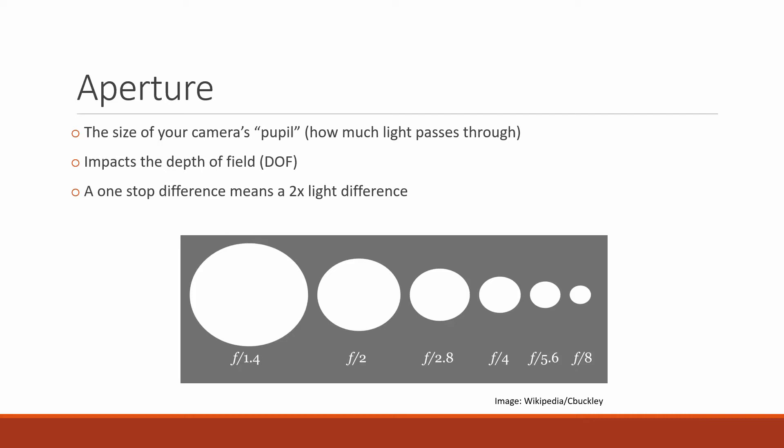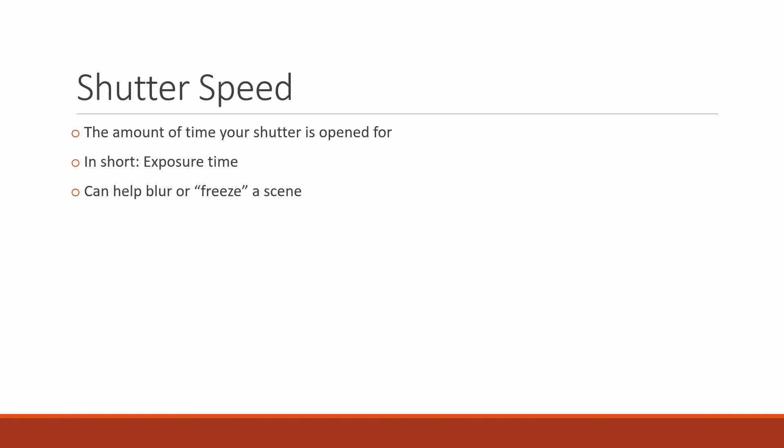You can go all the way down to f/22 or even f/32 depending on the quality of your lens and how many blades it has. You don't need to remember all of that — just remember that f/1.4 is a wide aperture whereas f/8 is a much smaller or narrower aperture.